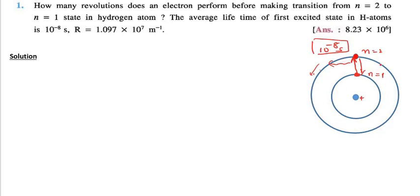It might have performed many revolutions in 10 raise to minus 8 seconds and that number of revolutions are what we supposed to find out over here. So in 10 raise to minus 8 seconds it is not stationary, it might have performed revolutions and those revolutions are what we are going to calculate.